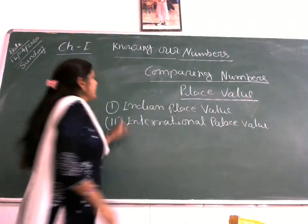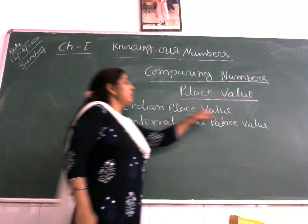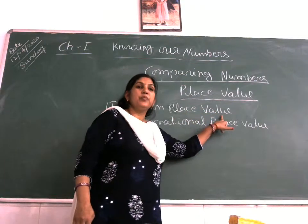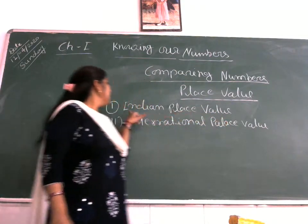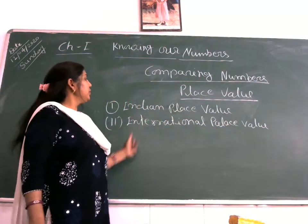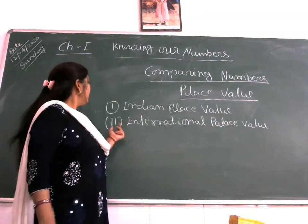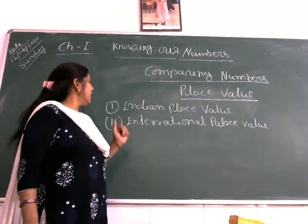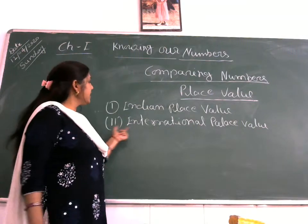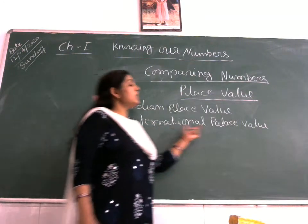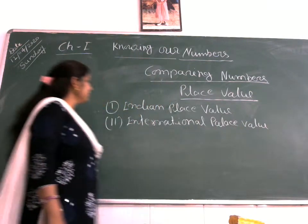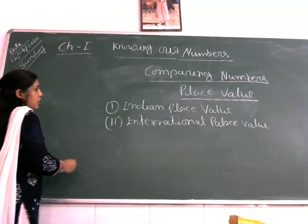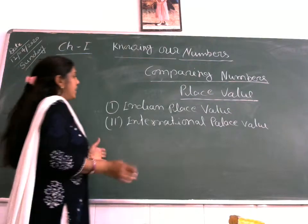There are two place value systems. First is the Indian place value system, which we use in daily life. Second is the International place value system. So let's make our chart.